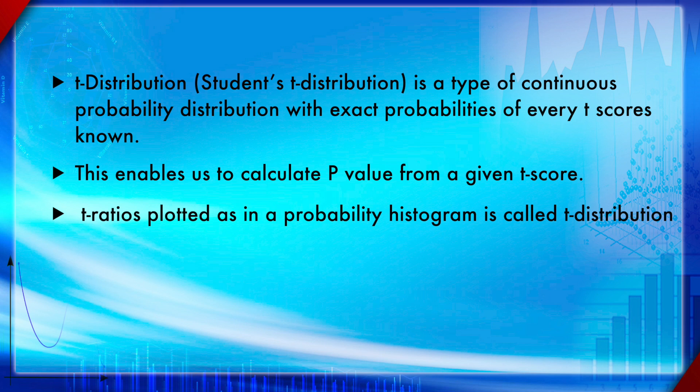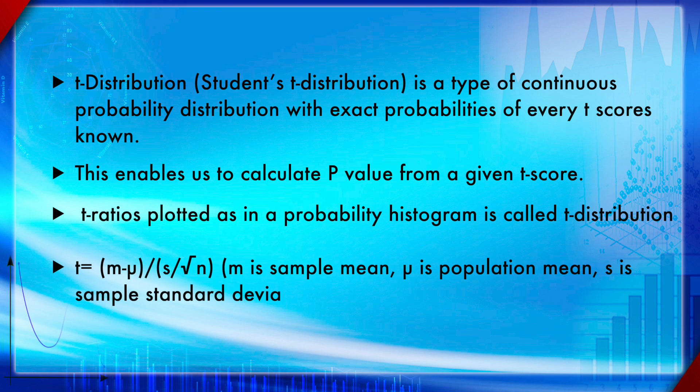The t-ratio is defined as the difference between sample mean and population mean divided by standard error of mean. Basically, it is m minus μ, where m is sample mean minus μ is population mean, divided by standard error of the mean. Standard error of mean is standard deviation divided by root n.